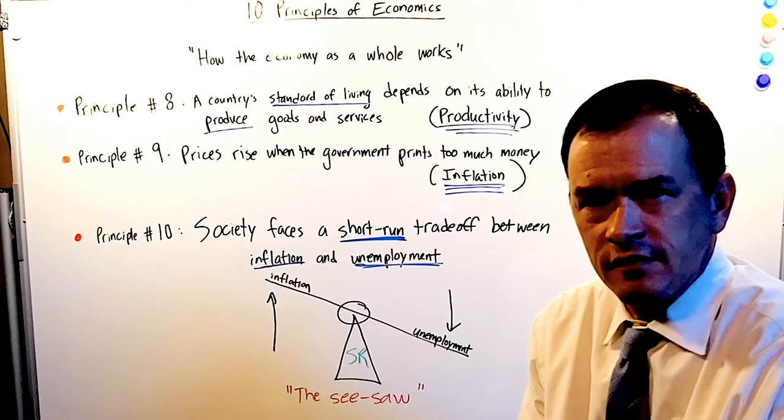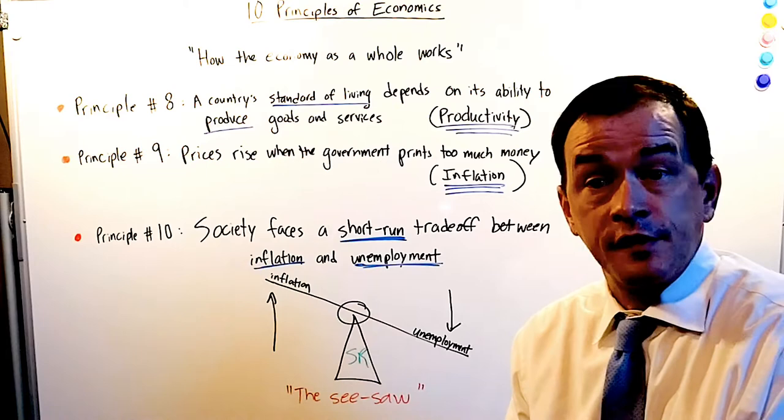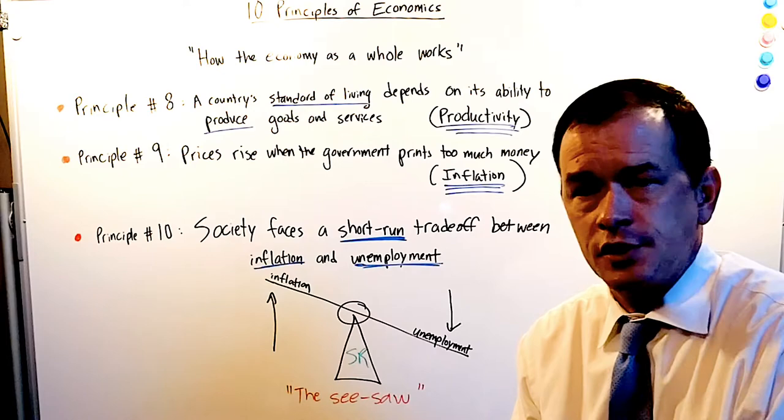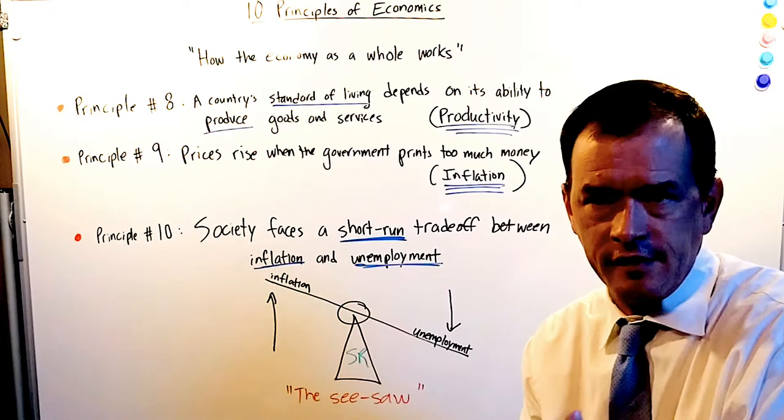Now, principle number nine: Prices rise when the government prints too much money. Largely the economies of the world work on what's called fiat money. We're no longer on a gold standard or anything that's backed, has anything with intrinsic value. Fiat money is a government basically saying, hey, trust us. And the government thinks all that confidence comes from them. But really, it comes from you, the consumer, and that believing that what your government's saying actually gives those dollars value.